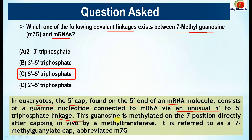This guanosine is methylated on the seventh position directly after capping in vivo by methyltransferase. It is referred to as the 7-methylguanylate cap, abbreviated as m7G.